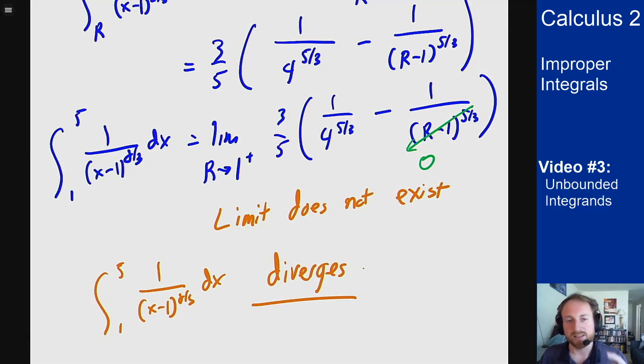So because this limit does not exist, because I had an (r-1) in the denominator that was going to 0, therefore this integral diverges. So different powers have different results based on whether they converge or diverge.